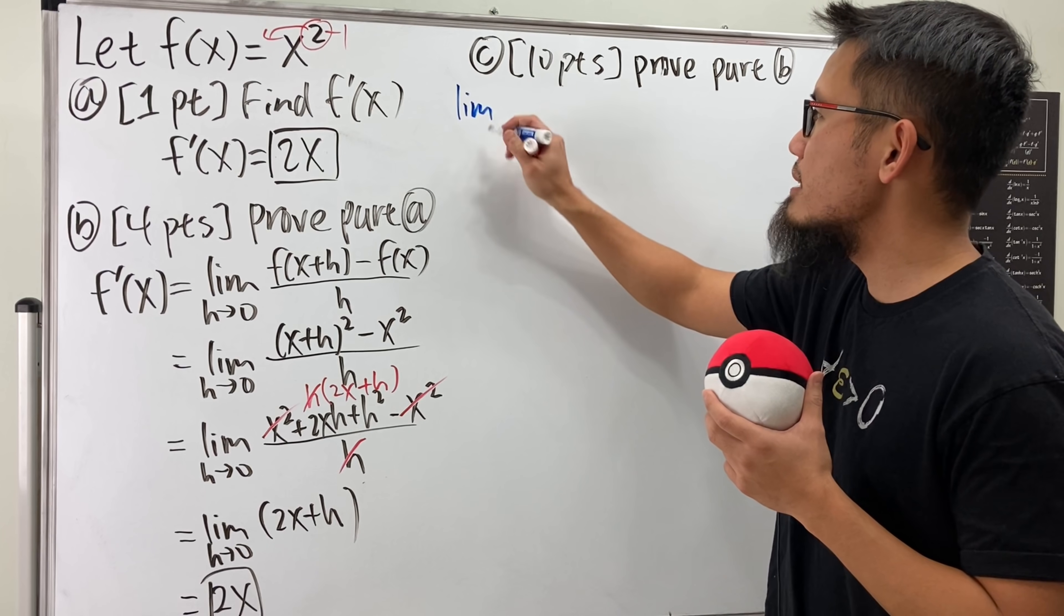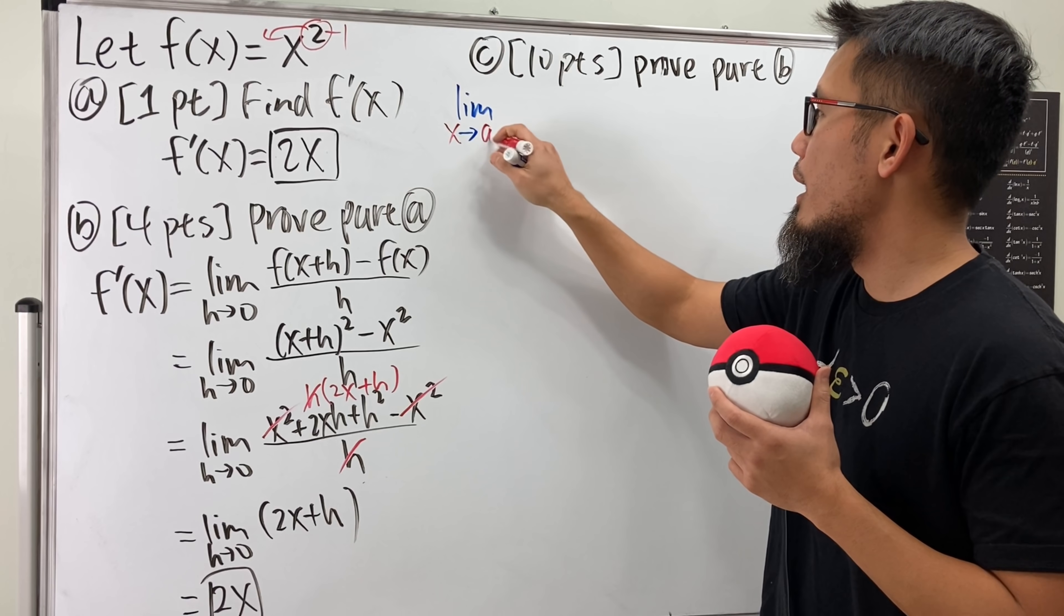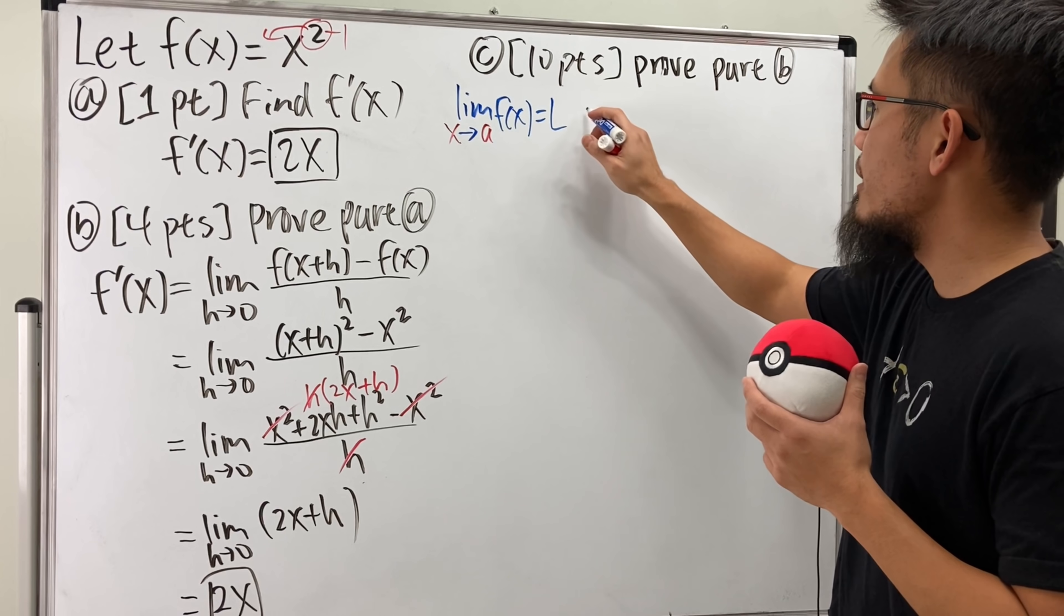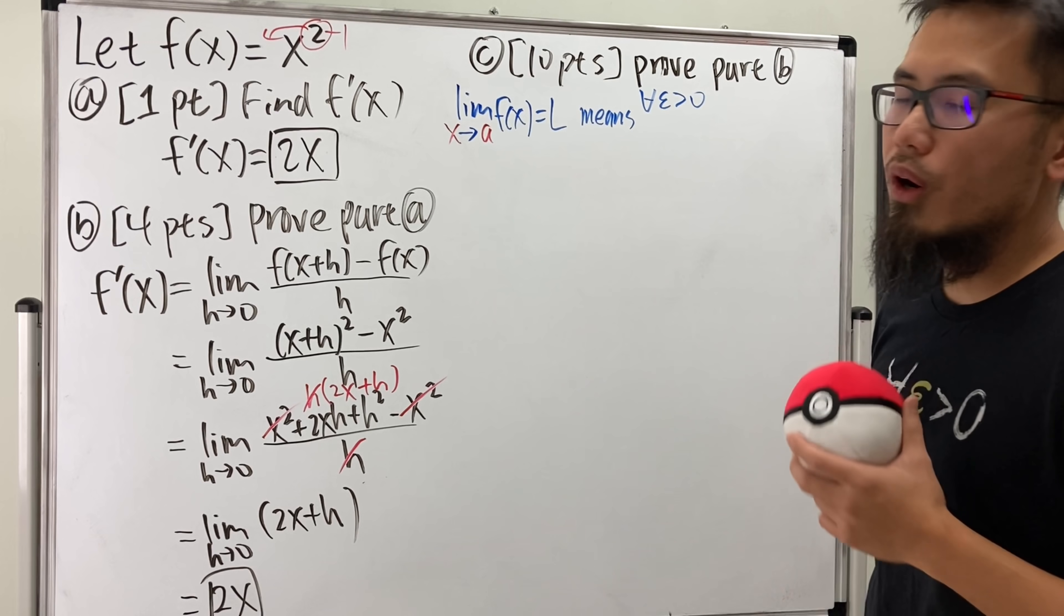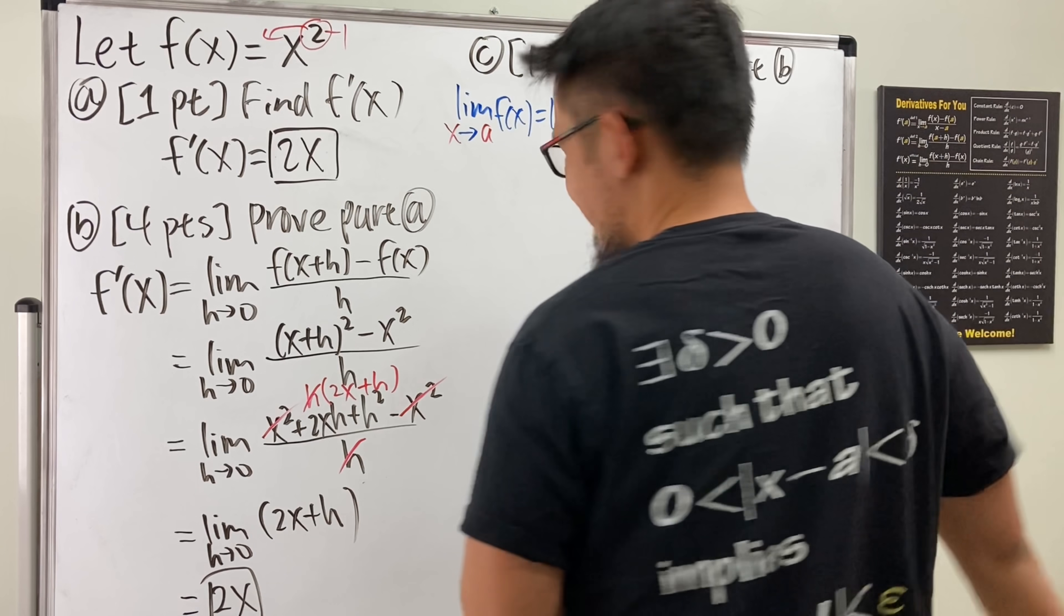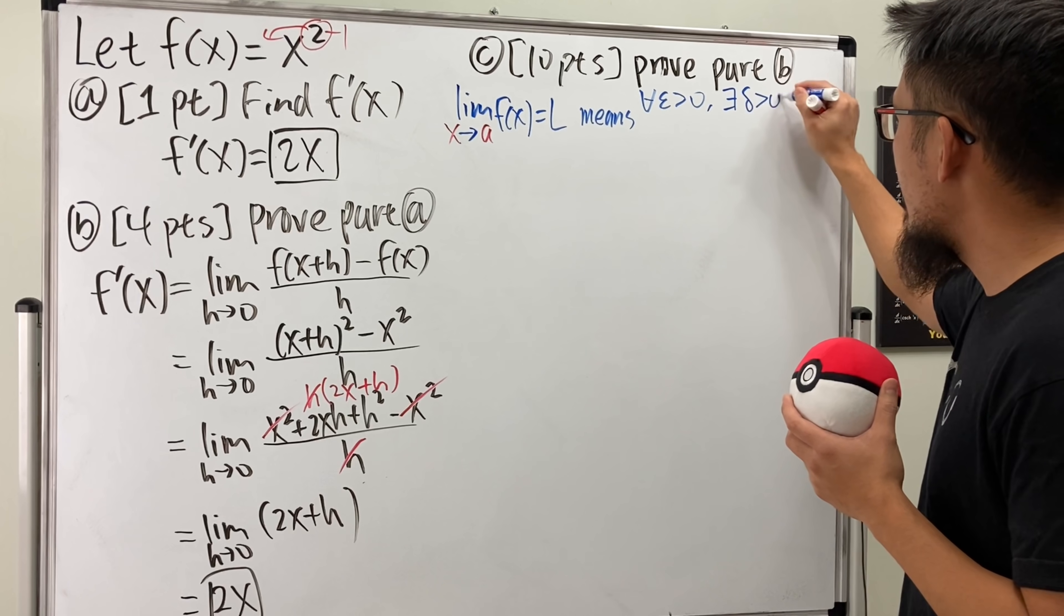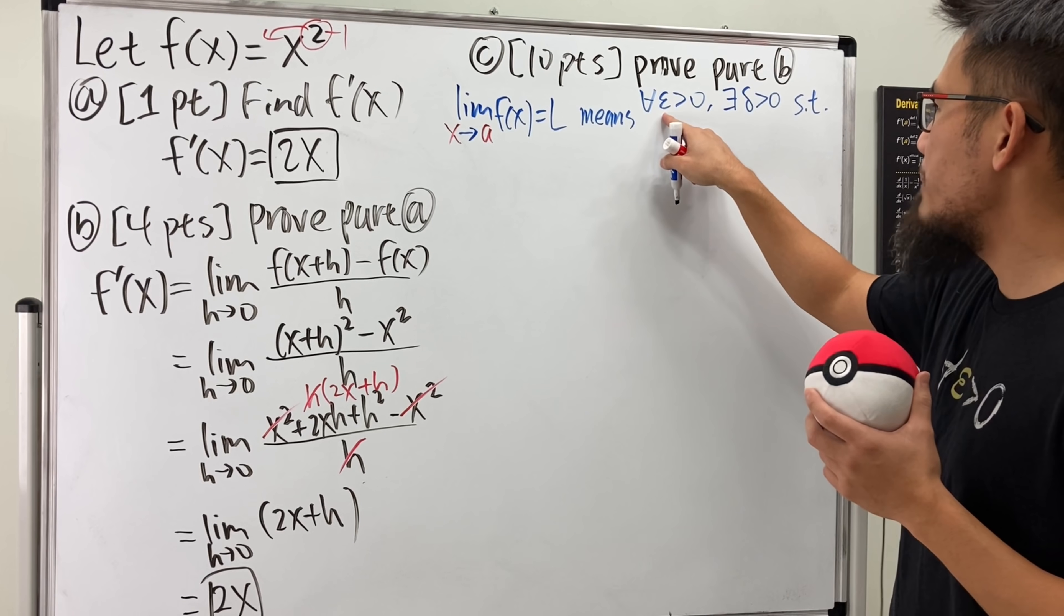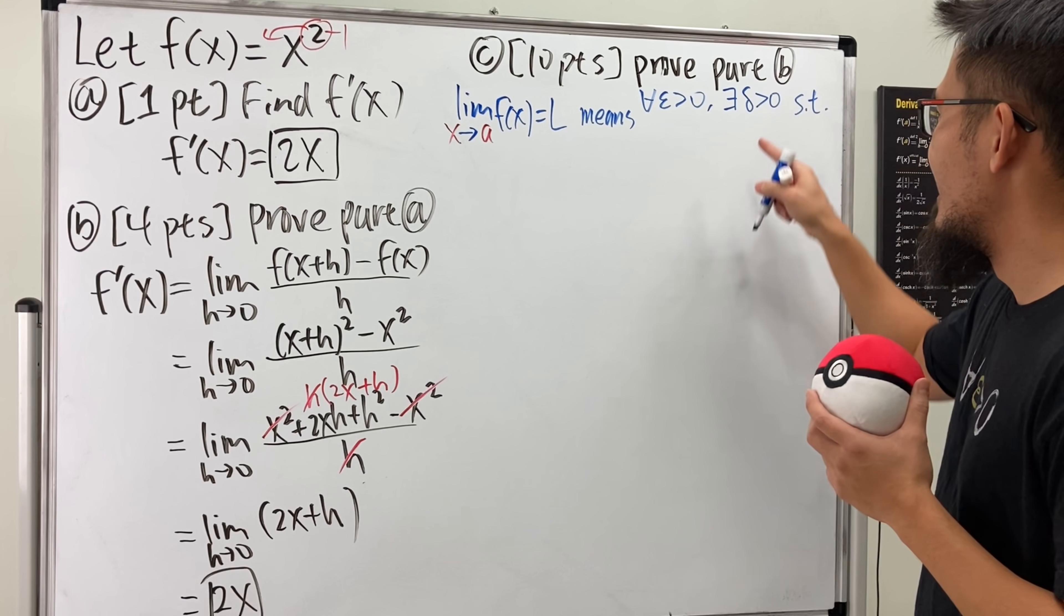Right here, when we have a limit, let's say we have x is approaching a. And then let's say we have some function f(x). And let's say this gives us L, right? This right here means for all epsilon greater than zero, and that's exactly what I have on my shirt. And the rest is actually on my back. All right, let me continue. There exists a delta greater than zero, such that, and you see, this is the epsilon-delta definition, the infamous definition.